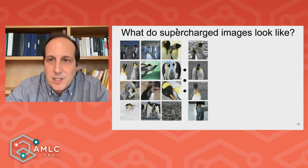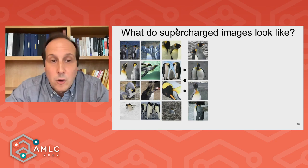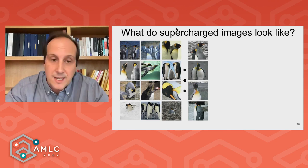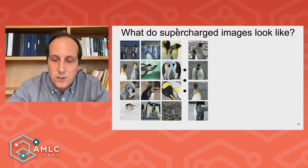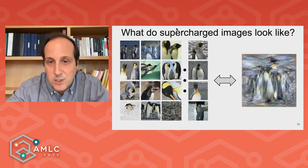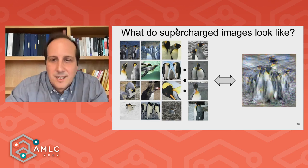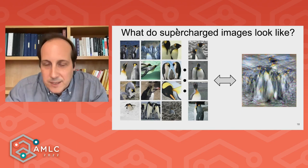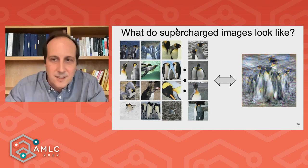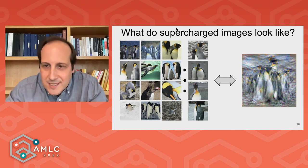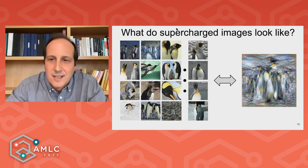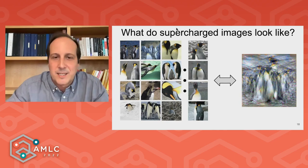So what do these supercharged images look like? Here is an example from ImageNet — the class containing penguins. When you compress this set of images into a single image to achieve the same performance, what this image tries to do is produce the same type of learning trajectories in parameter space when used to train your system via backpropagation. So the supercharged image looks like this: a single image summarizing the entire class of penguin images. It doesn't look real at all — it looks a little bit textured — and it actually seems to contain multiple superimposed versions of penguins looking in different directions, which seems to be a good summary of this class.